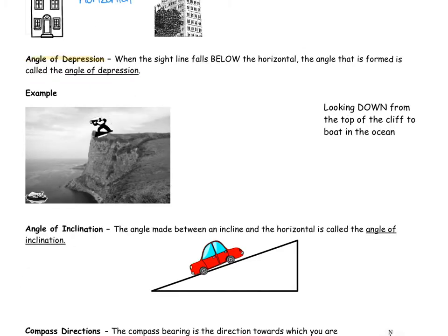The next one is called the angle of depression. This is when the sight line falls below the horizontal — so you're looking down, for instance from the top of a cliff to a boat in the ocean. It's the angle formed between the sight line and the horizontal. Here you are at the top of a cliff, this would be the horizontal, and your sight line is looking down towards the boat. The angle is formed between the sight line and the horizontal — that's the angle of depression.